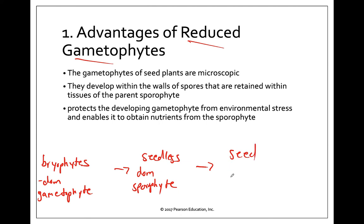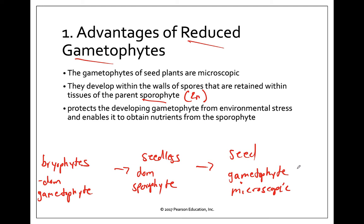Now we get to the seed plants and the gametophyte is even smaller — it is microscopic at this point. It is actually retained completely inside the tissue of the parent sporophyte. So this is our diploid plant, and the haploid gametophyte stays inside the diploid plant. This is totally new because in the seedless plants the gametophyte was able to be separate and outside.